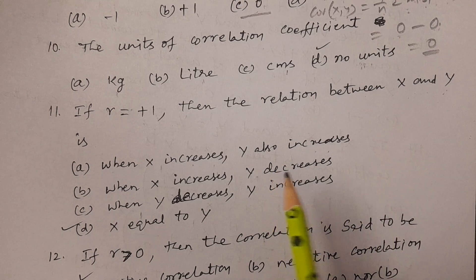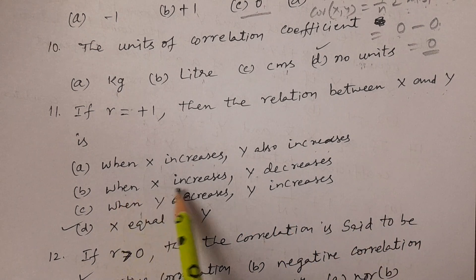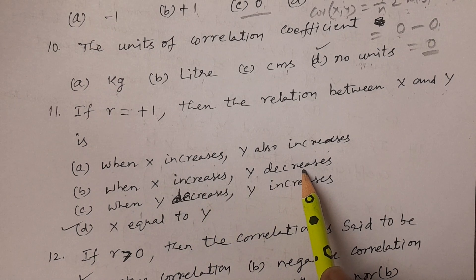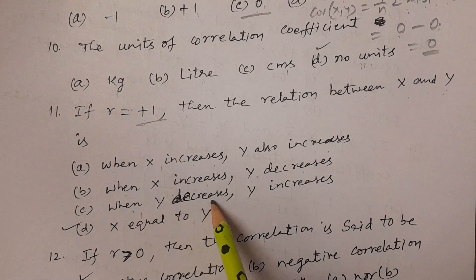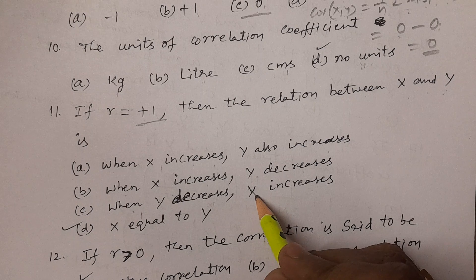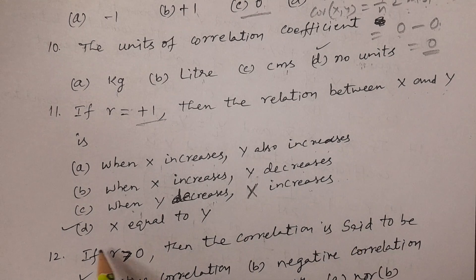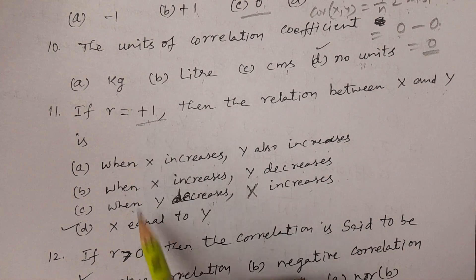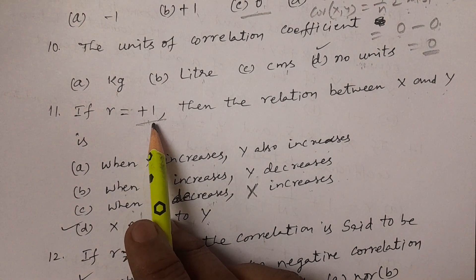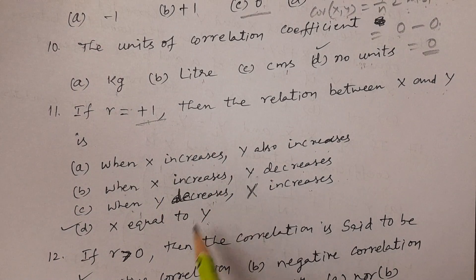If X increases and Y decreases, that is negative correlation. When X decreases and Y increases, also negative. The correct answer is option D: when X equals Y, you get R equals plus one. That is called perfect positive correlation. The correct answer is option D, X equal to Y.